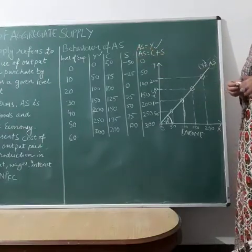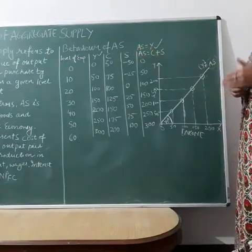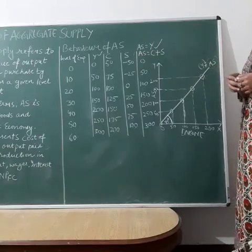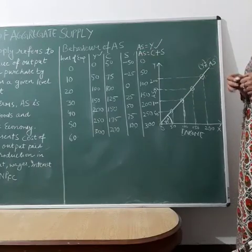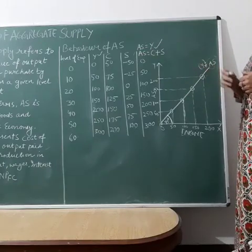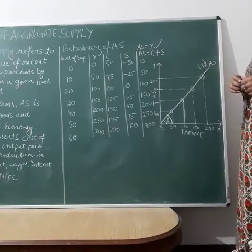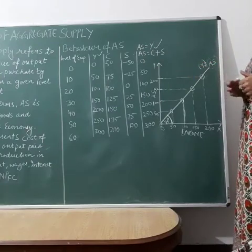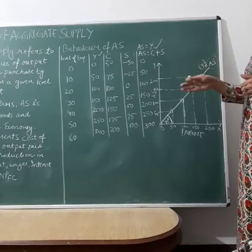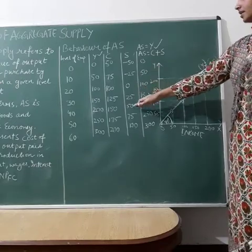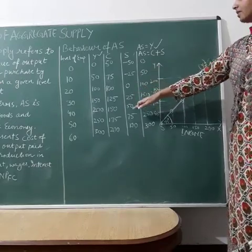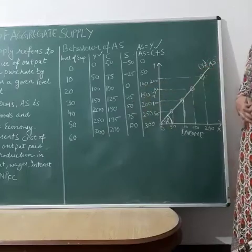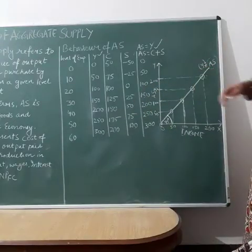We can find savings by applying the formula S = Y minus C. So 0 minus 50 equals minus 50; 50 minus 75 equals minus 25; at 100 minus 100 we reach the break-even point where savings are 0. After that, savings increase by 25 at each level.